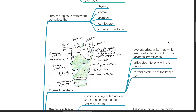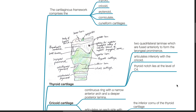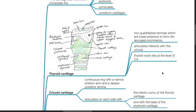The thyroid notch lies at the level of C4. The cricoid cartilage is a continuous ring with a narrow anterior arch and a deeper posterior lamina. It articulates on each side with the inferior cornu of the thyroid cartilage and with the base of the arytenoid cartilage.